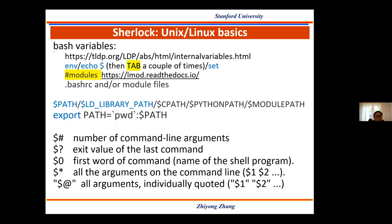Shell variables use a dollar sign followed by the variable name to get their value. When you type the dollar sign and then press tab a couple of times, that's one of the auto-complete shortcuts the shell offers. If you don't know the exact command, you can type part of it and press tab to auto-complete and see what commands are available. This is another way to get all variables defined in your environment.